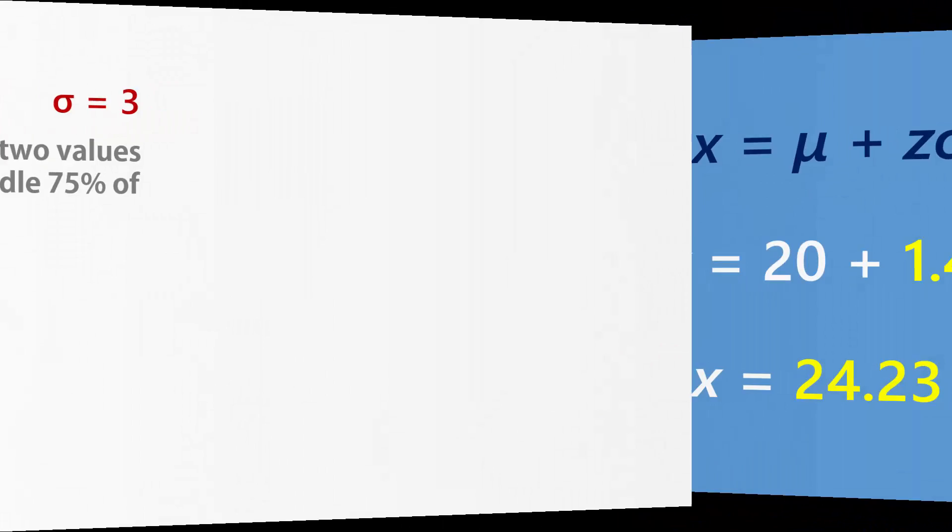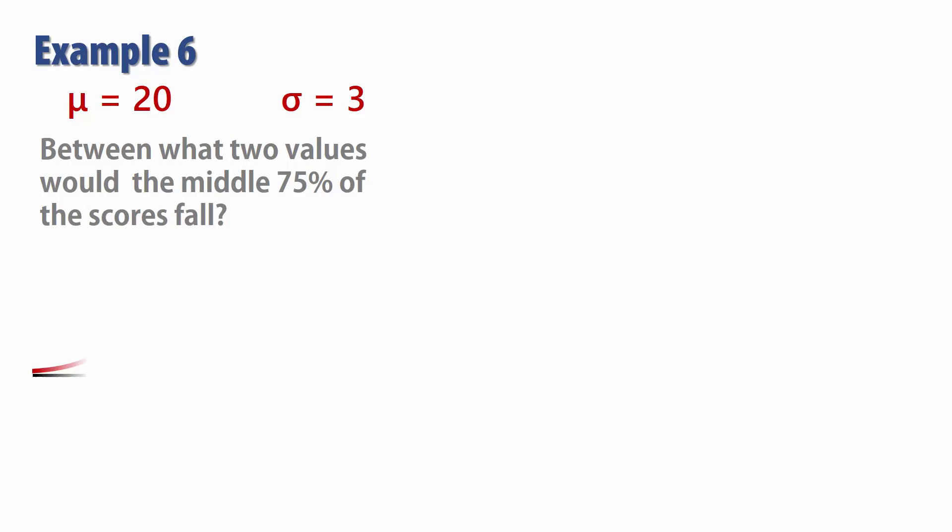Let's look at one more example. Here we want to find two values, a lower limit and an upper limit that will be boundaries for the middle 75% of the scores. With 0.75 in the middle, we have 0.25 divided equally into the tails. That is, 0.125 in each tail.